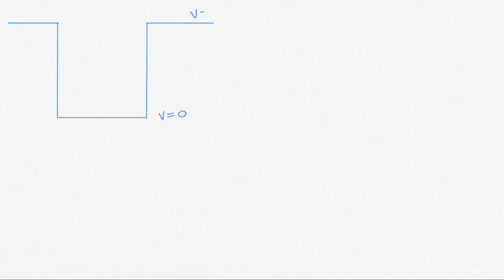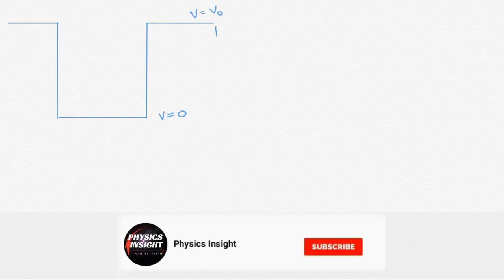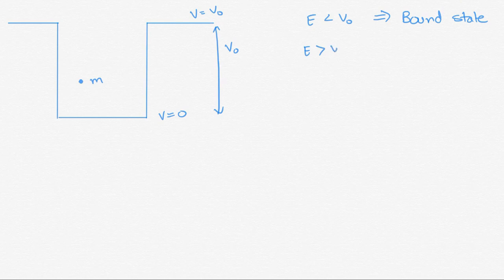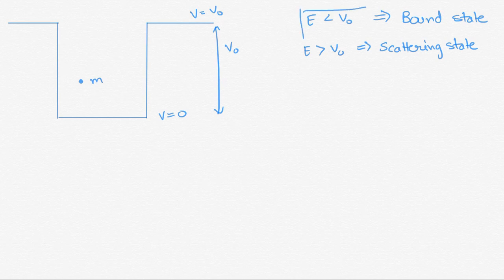Consider a box having a finite potential at its walls. Let's say the potential is V=0 inside and V=V₀ at the walls, giving a potential difference of V₀. Consider a particle of mass m in this box. We can say the particle is in a bound state when its energy is less than V₀, and in an unbound or scattering state when its energy is greater than V₀ — meaning the particle can be anywhere. In this video we discuss the bound state case where E is less than V₀.